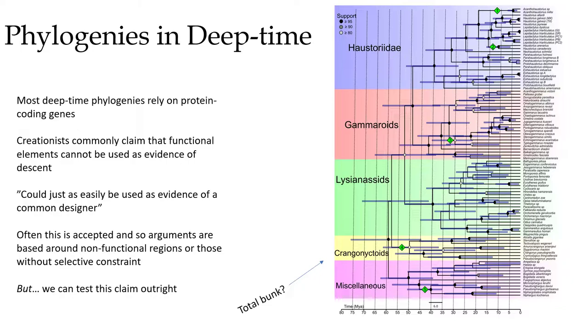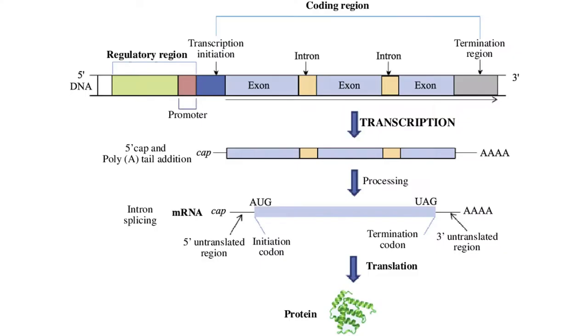Often I have seen people just kind of accept this, accept their argument, and try to get around it by using non-functional regions of the genome that are not under selective constraint because they're going to grant them this particular argument. However, we can actually test this claim outright and we can see if their intuition is true on this. So what I'm showing here is a phylogeny that I built for amphipods. These are tiny little crustaceans. They live all over the world. And these are families that are very deeply diverged from each other. Their common ancestor likely lived at some point in time during the Jurassic. So millions and millions of years ago, and I used a combination of protein-coding genes and ribosomal genes for this. So according to creationists, this phylogeny is total bunk. It can't be used because these are functional genes. So let's see if we can actually test this.